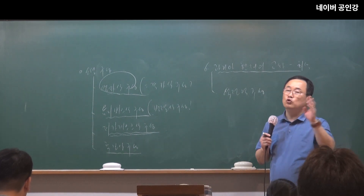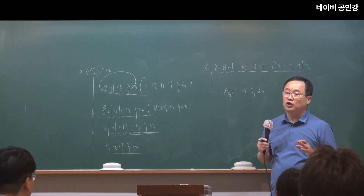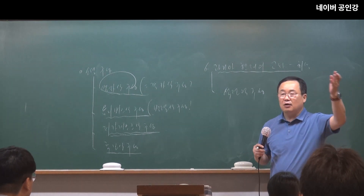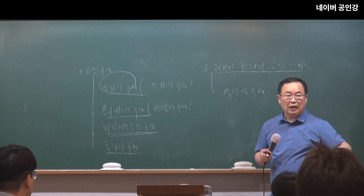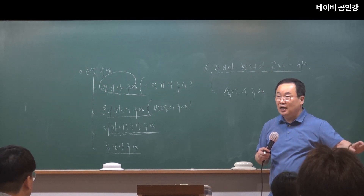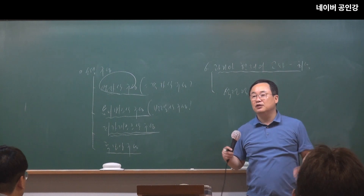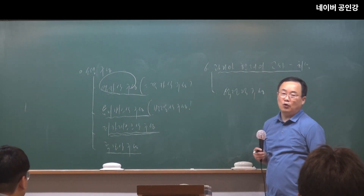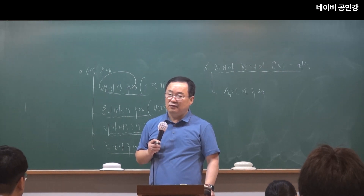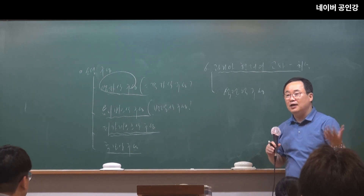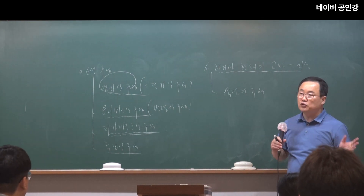가뭄 때문에 댐 수위가 낮아져 오래전에 수몰된 마을의 도로, 다리, 옛 집이 드러나는 모습을 TV를 통해 본 적 있죠. 30~40년 동안 물에 잠겨 있었는데 어느 날 가뭄이 들어 드러나버리자, 고향 사람들이 그 옛날 길을 다시 걷는 장면이 연출됩니다. 이런 것들도 과거와 현재의 교차, 역전적 구성과 관련해서 이야기할 수 있습니다.